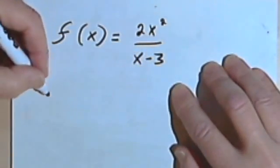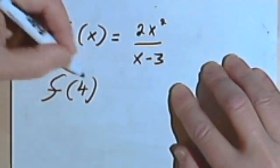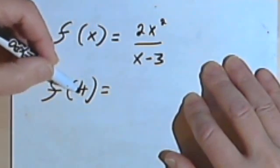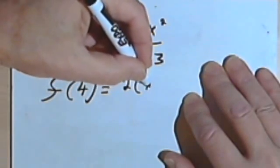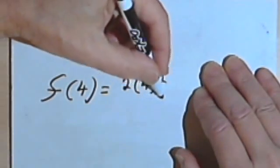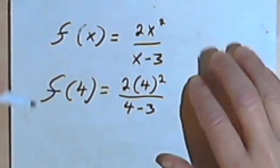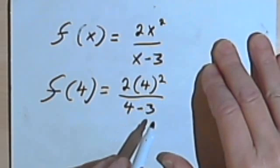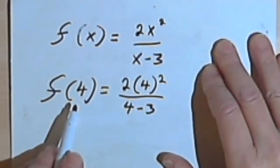So in other words, if I'm told to evaluate, let's say, f of 4, then all I'm going to do is take the 4, put it in wherever I have an x. So I'm going to have 2 times 4 squared instead of 2 times x squared, and that's going to be over 4 minus 3. In other words, this part on the right, 2 times 4 squared over 4 minus 3, is what the function equals when the input is 4.